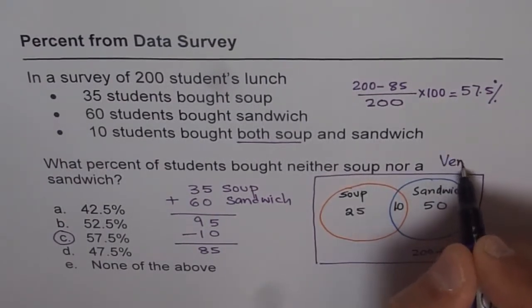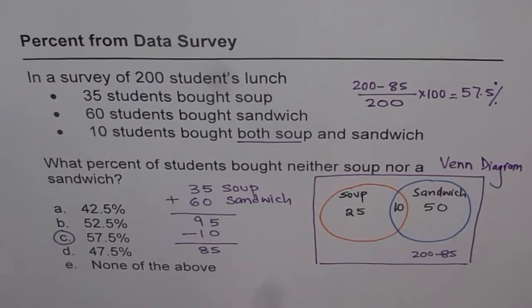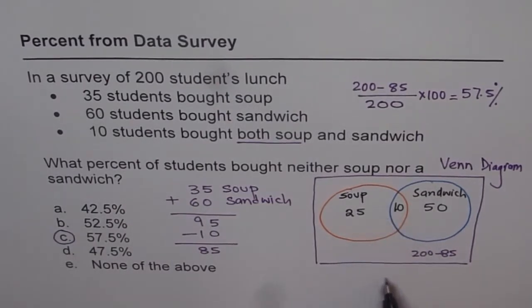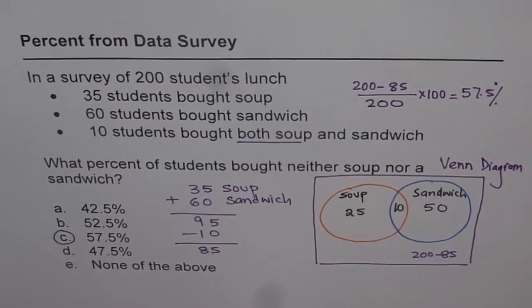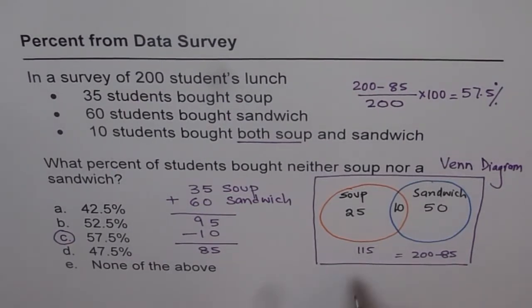This is an introduction to Venn diagrams. Venn diagrams give us a very clear picture in such cases and help us solve questions faster and efficiently. If this had been more complicated with one more choice, we would have made one more circle. We'll take that in the next video. The answer is the same: 200 minus 85 is 115, and 115 divided by 200 times 100 gives 57.5%. I hope you appreciate both solution methods. Thank you.